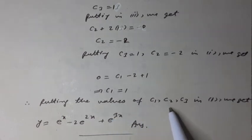Therefore, putting the values of c1, c2, c3 in equation number 1, we get y is equal to e to the x minus 2 e to the 2x plus e to the 3x. Answer.